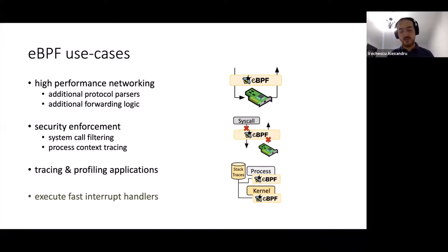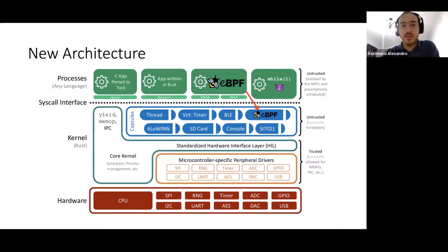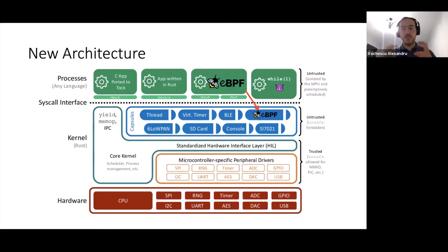Our use case is to use eBPF programs to execute fast interrupt handlers in TalkOS. In the new architecture, inside the capsules we would have a new capsule that is able to interpret and create a virtual machine that runs eBPF code. From the application, we can send eBPF code to the capsule that should run when an interrupt occurs. When an external interrupt comes on a pin, we upload the eBPF code to be run, and the capsule executes it.